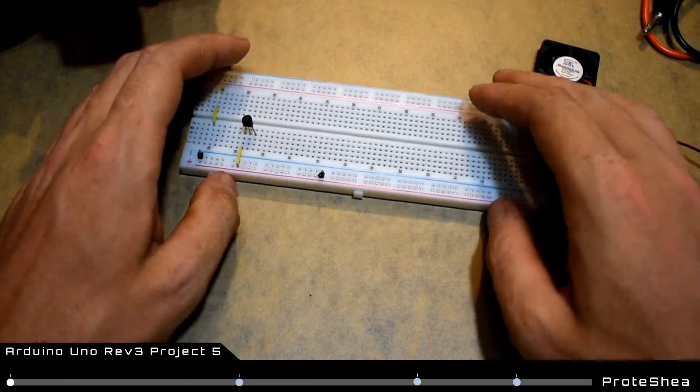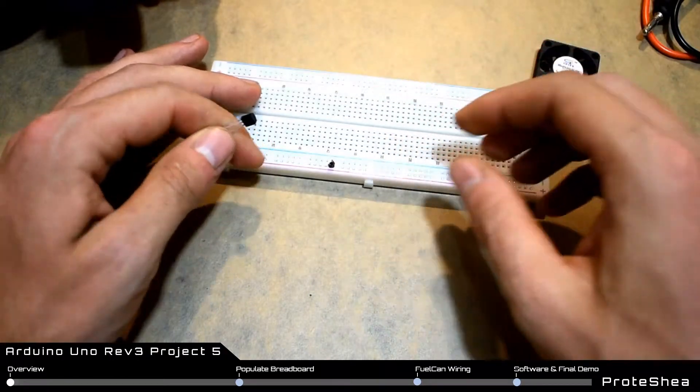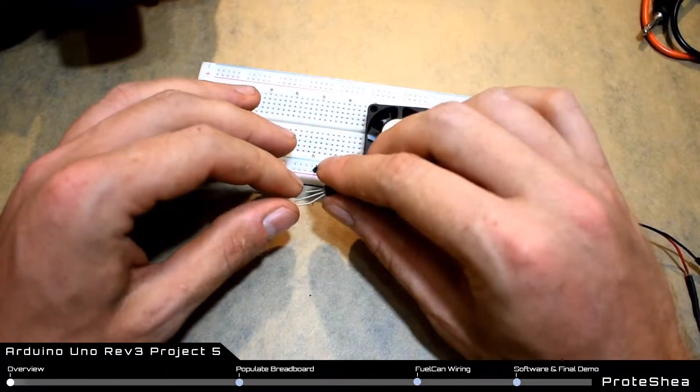Welcome Protege. In this project we'll be using an n-channel MOSFET to drive a brushless DC fan with an Arduino UNO REV3.